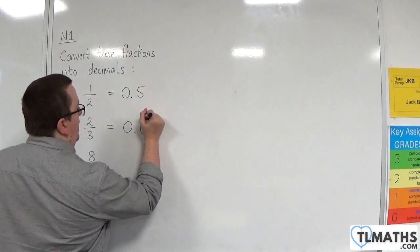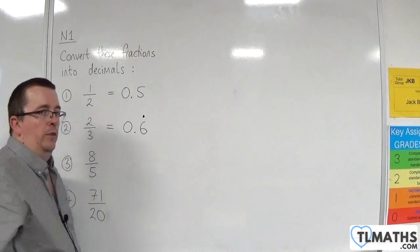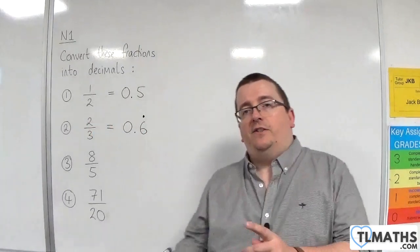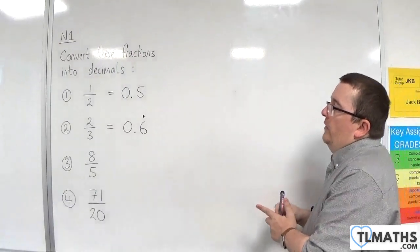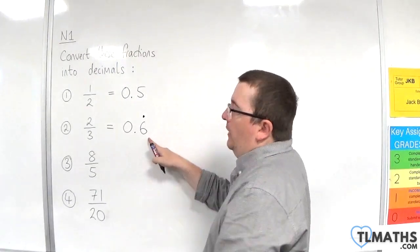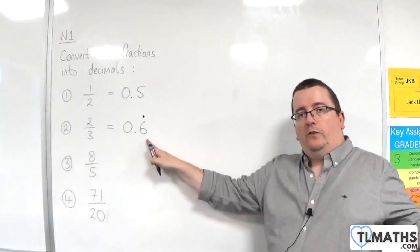And there are different ways of identifying recurring, but one way is to put a dot on the top of the 6. And that identifies that it is the 6 that is repeating. So this represents 0.6666666666 forever.